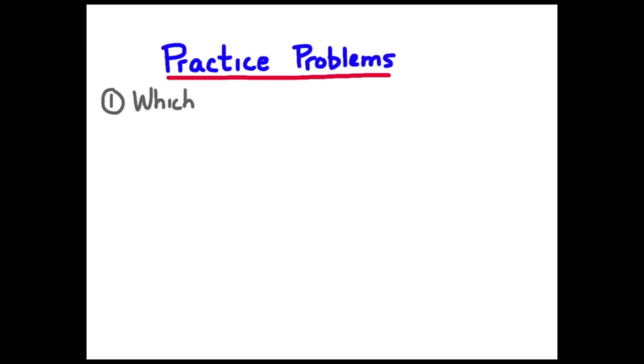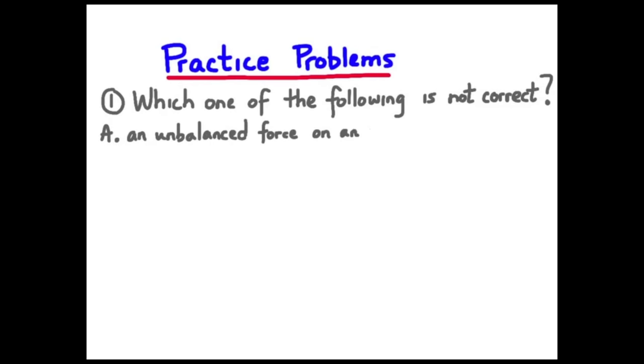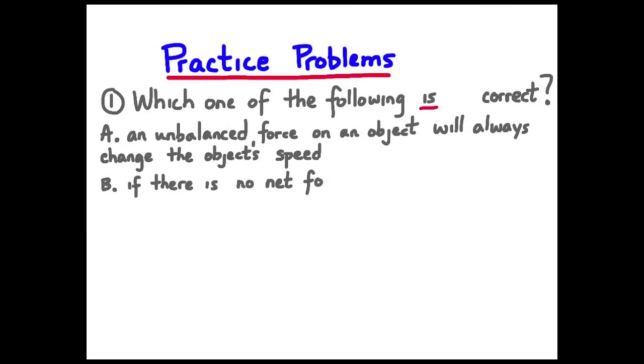All right, let's try a practice problem here. And we'll get your viewers in a position where you can pause them and try this question. So the question goes like this. Which one of the following, we're going to change that to is correct. Which one of the following statements is correct? And A says, an unbalanced force on an object will always change the object's speed.